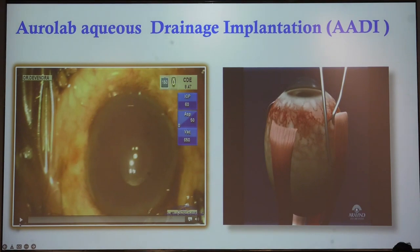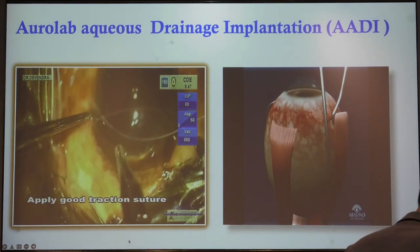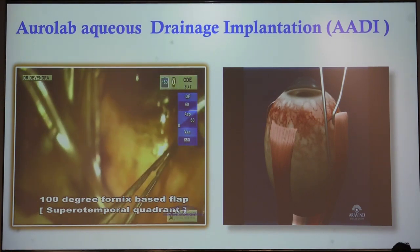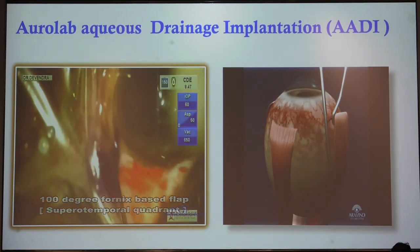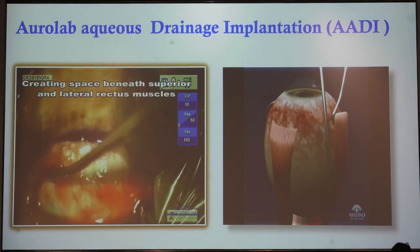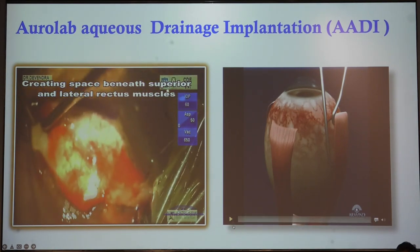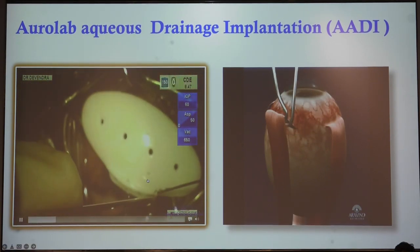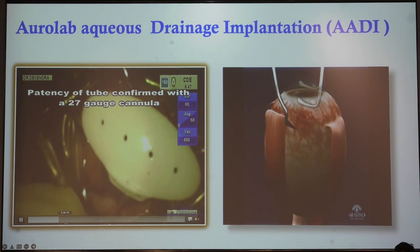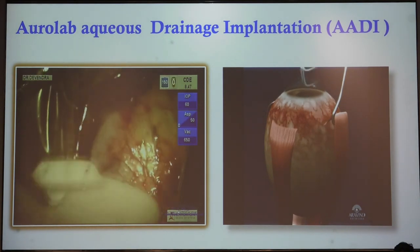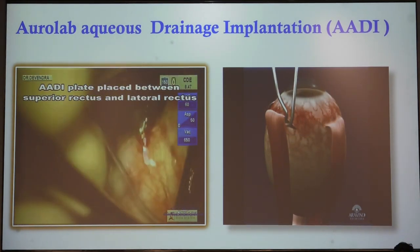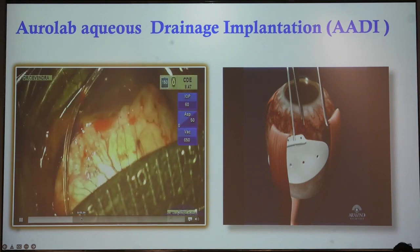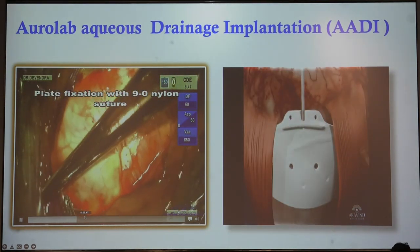This is the case of pseudophakic glaucoma. A fornix-based conjunctival flap has been made. Do a nice blunt dissection to isolate the superior rectus and the lateral rectus muscle. A muscle hook is used to create the space underneath the muscle. Here we are creating space under the muscle, and the patency of the RD tube has been checked. The plate has been placed under the belly of the superior rectus and lateral rectus muscle, and the plate must be fixed at least 8 to 9 mm away from the limbus.